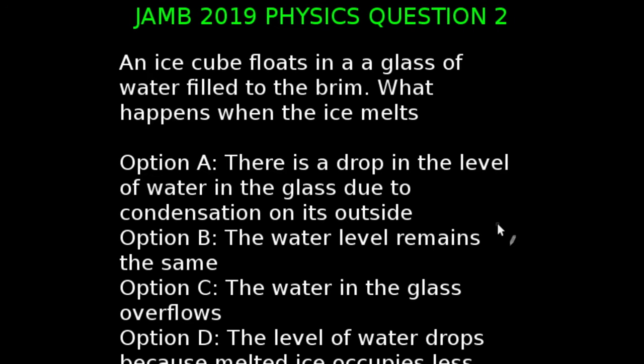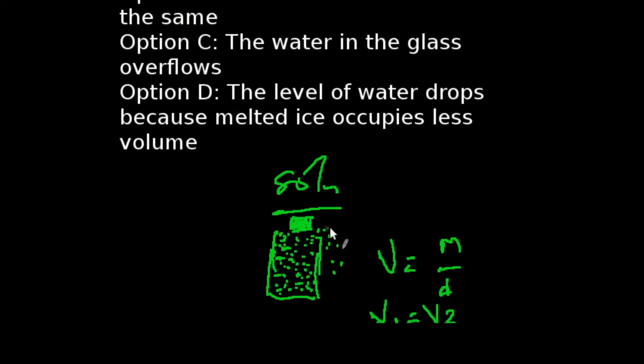Question 2 of JAM 2019 physics exams. An ice cube floats in a glass of water filled to the brim. What happens when the ice melts? We're going to be looking at this question in two ways. In the first state, for an ice cube to float, it must throw off water sufficient enough to support its weight in the glass of water. How much is that? That is simply volume, mass over density, where m is the mass of the ice cube and d is the volume of water.